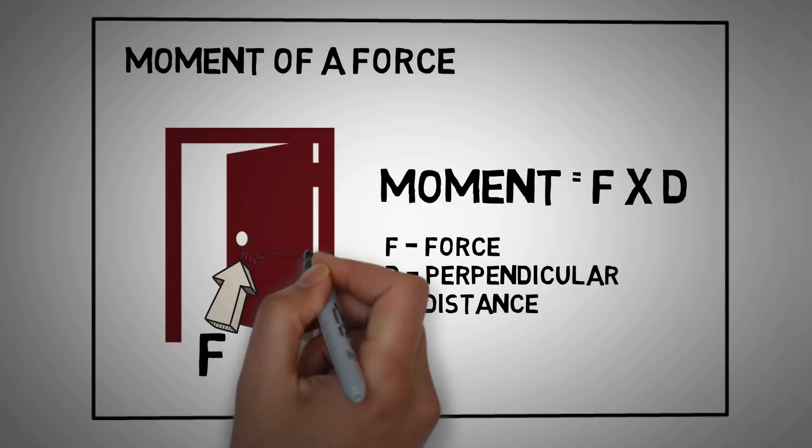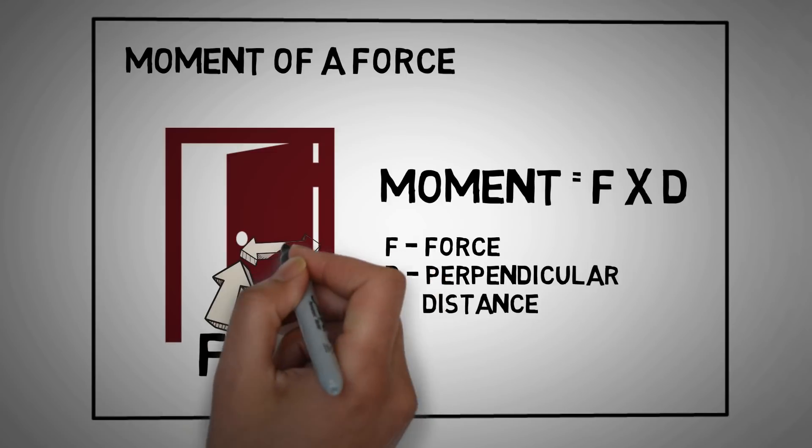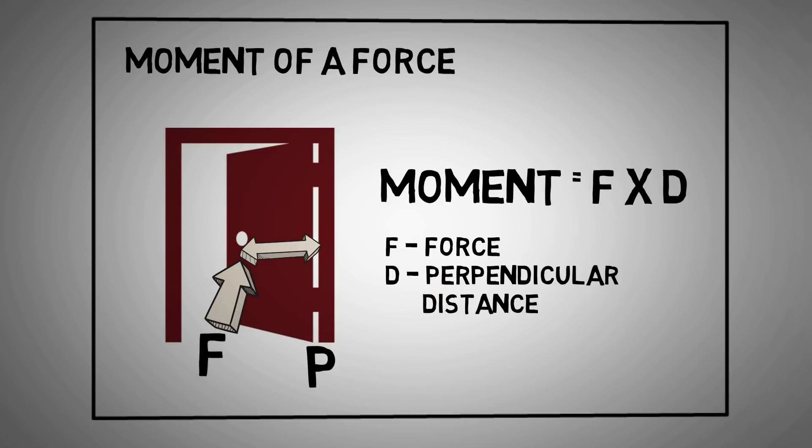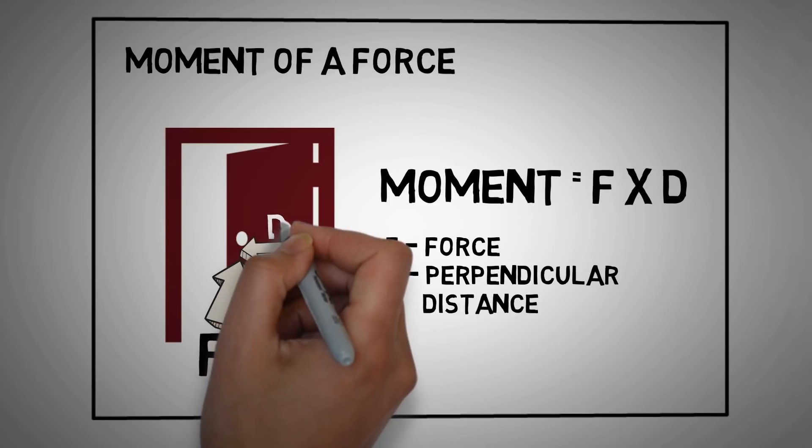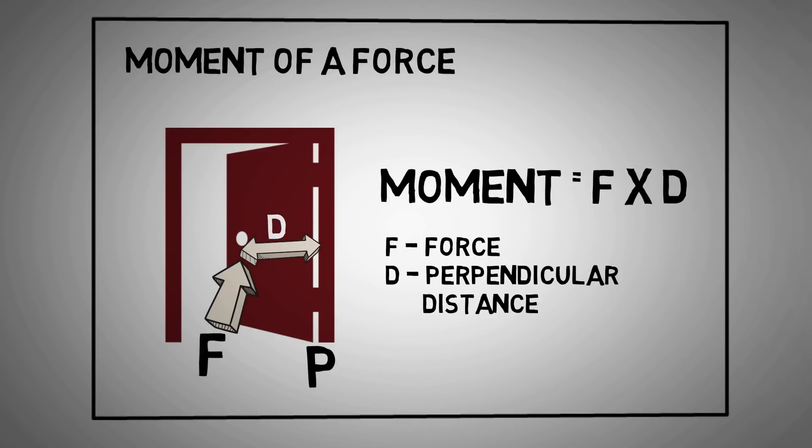The moment of a force about a point is the product of the magnitude of the force and the perpendicular distance between the line of action of the force and the point.